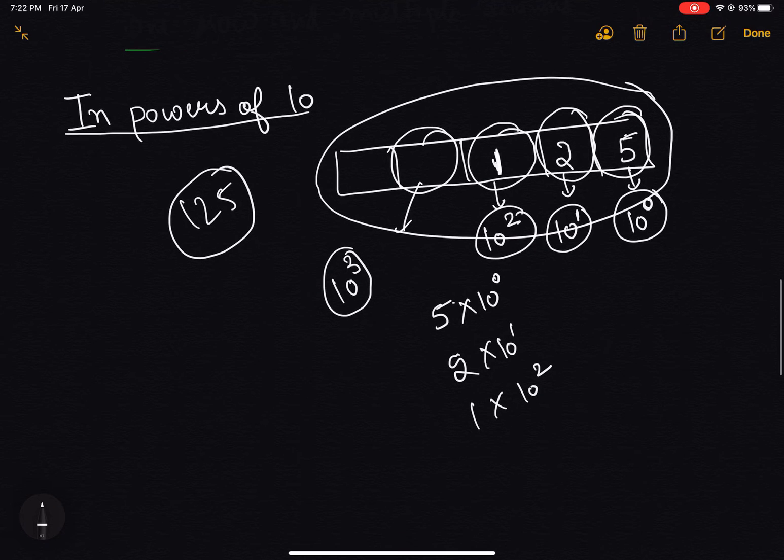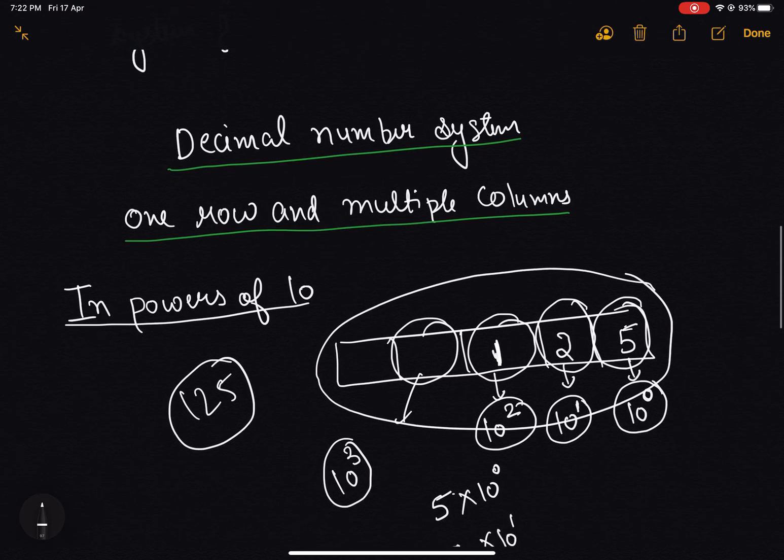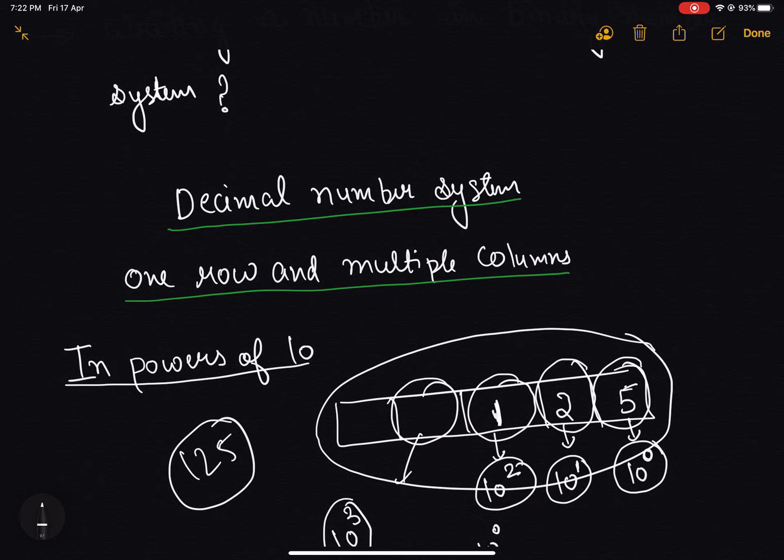Now if I want to evaluate the number, I can simply sum it up. And as we can see that after summation, what we get is equal to 125. So this is the way how we write the numbers in decimal number system.